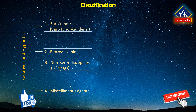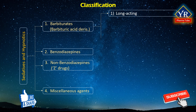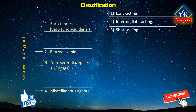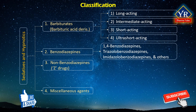Barbiturates are further divided into four groups depending on the duration of clinical action: long-acting barbiturates, intermediate-acting barbiturates, short-acting barbiturates, and ultra-short-acting barbiturates. Benzodiazepines are further divided into four classes — 1,4-benzodiazepines, triazolobenzodiazepines, imidazolobenzodiazepines, and others — depending on the heterocyclic ring system present in the structure.